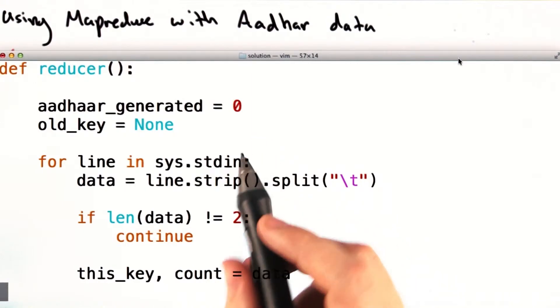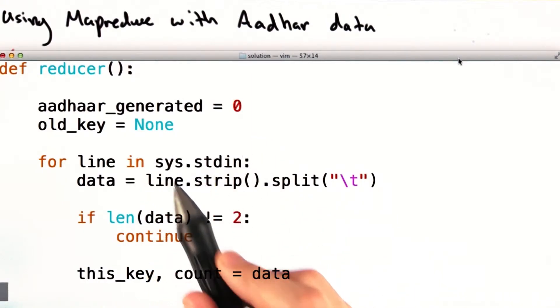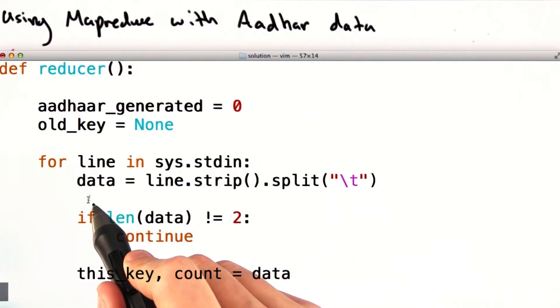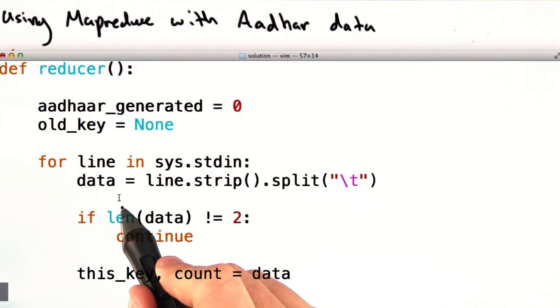Now, let's talk about the reducer function. Recall that our reducer function will consume the key value pairs emitted by our mapper. So we create an array, data, for every single line, which will essentially be of length two, containing the key and the value.